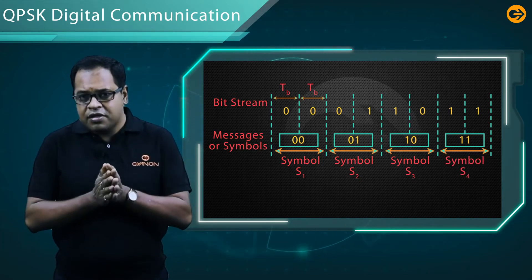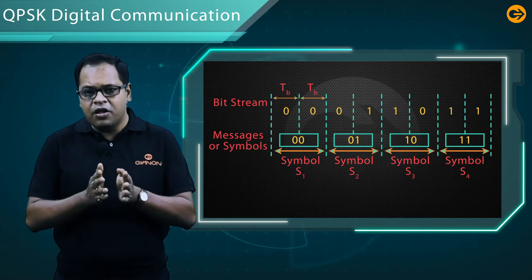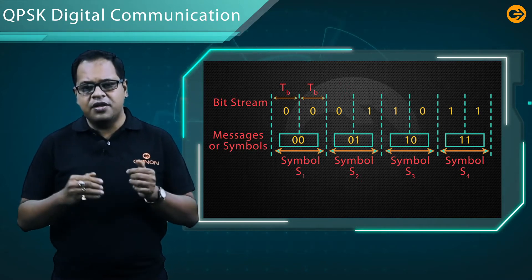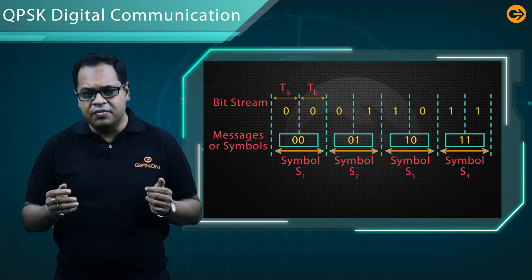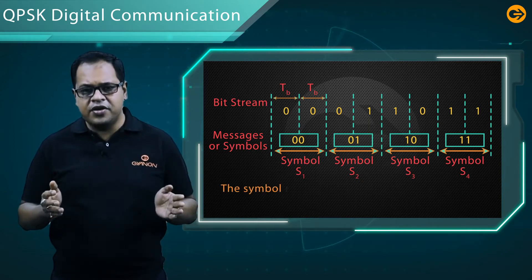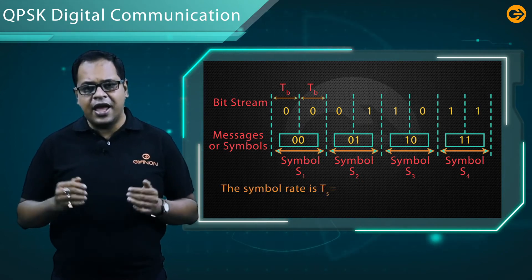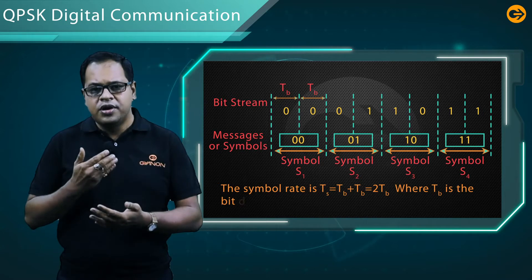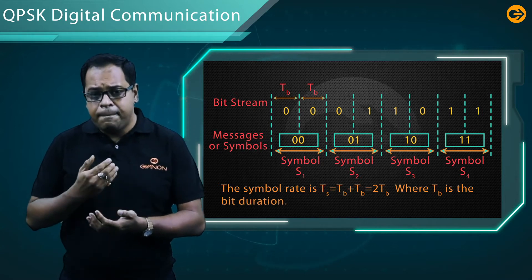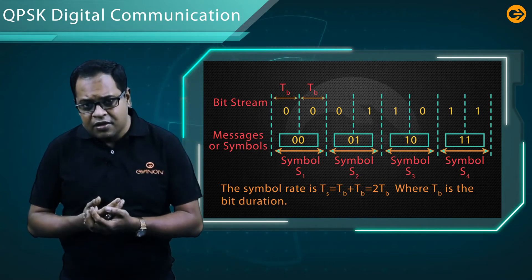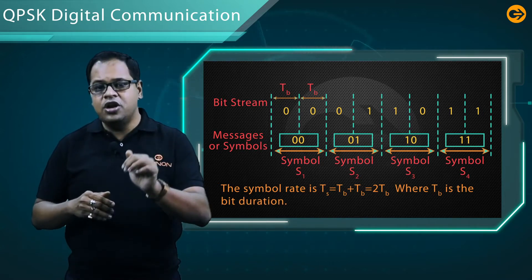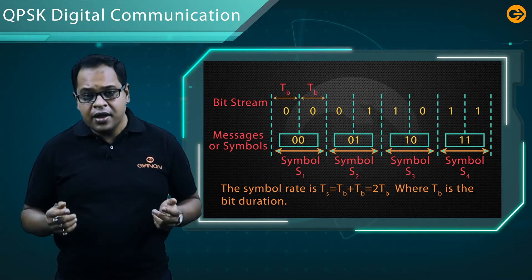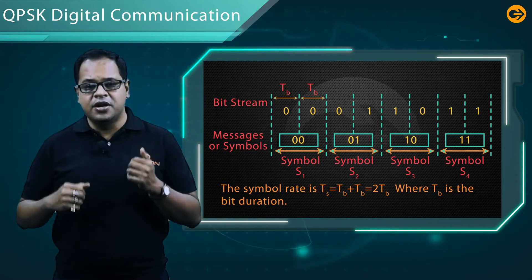In this case, two symbols or two pieces of information are transmitted simultaneously. Hence the symbol rate Ts is equal to Tb plus Tb, for two symbols equal to 2Tb, where Tb is the bit duration.